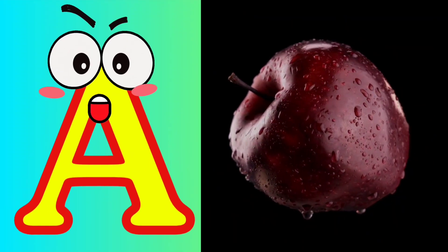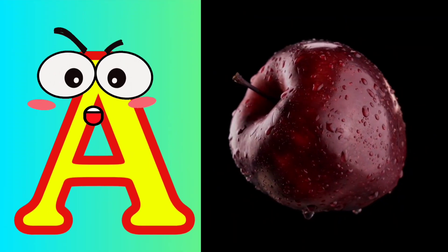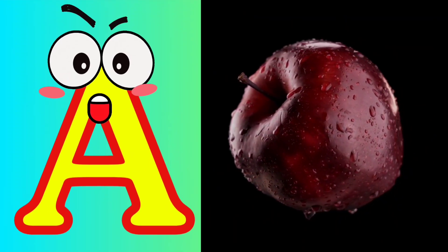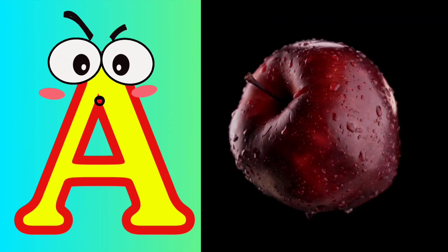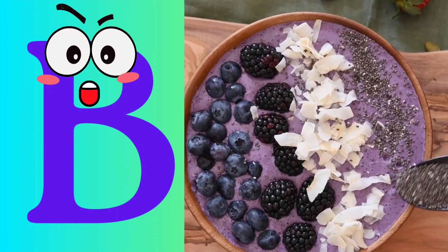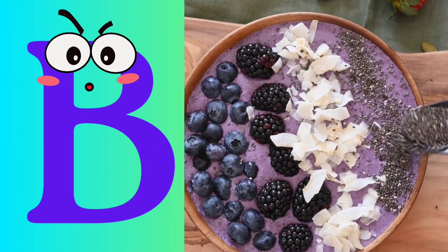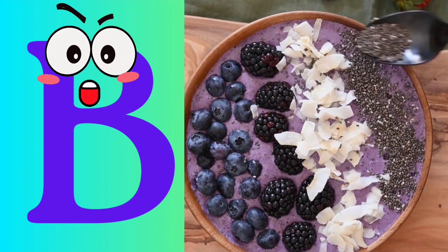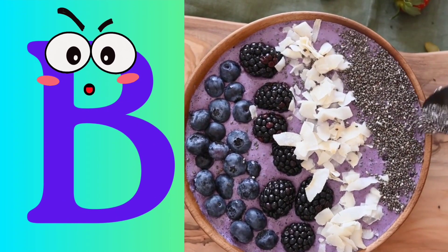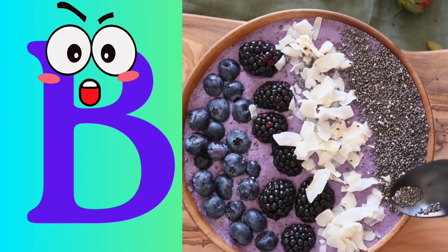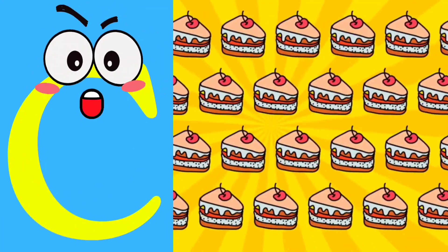Let's learn alphabets. A is for Apple. B is for Berries. Berries.